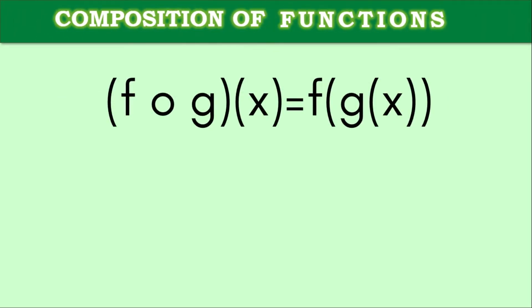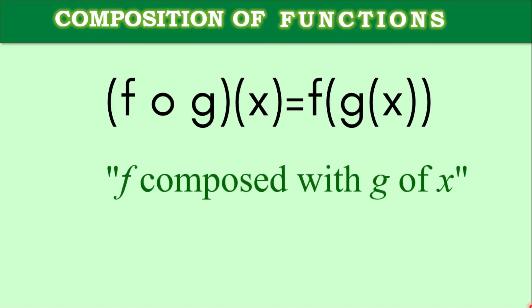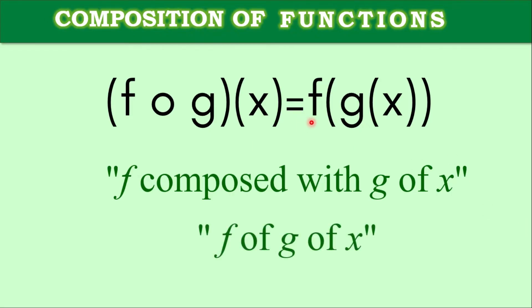This is how you write the composition of functions. We use a circle symbol between f and g. You read it as 'f composed with g of x,' which is also written as f of g of x.